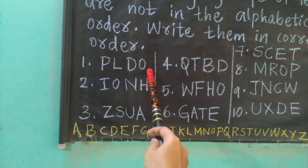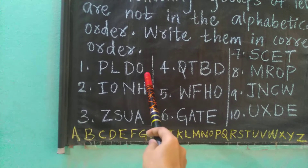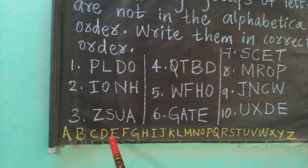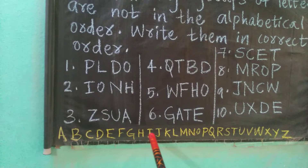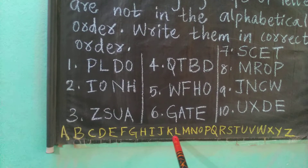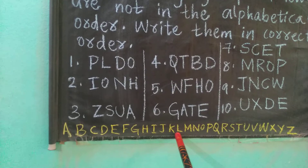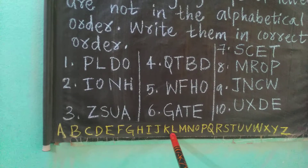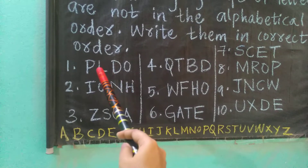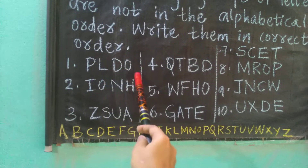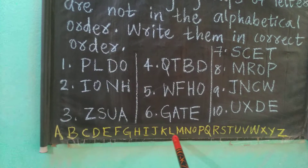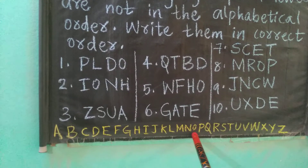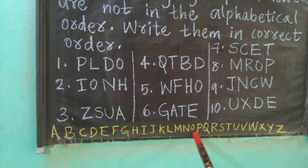Now let's check whether P is coming first, L is coming first, or O is coming first. Let us check here — L is coming first. So the second letter will be L. After L, P is left and O is left. Let us see — after L, O is coming, and after O, P is coming.